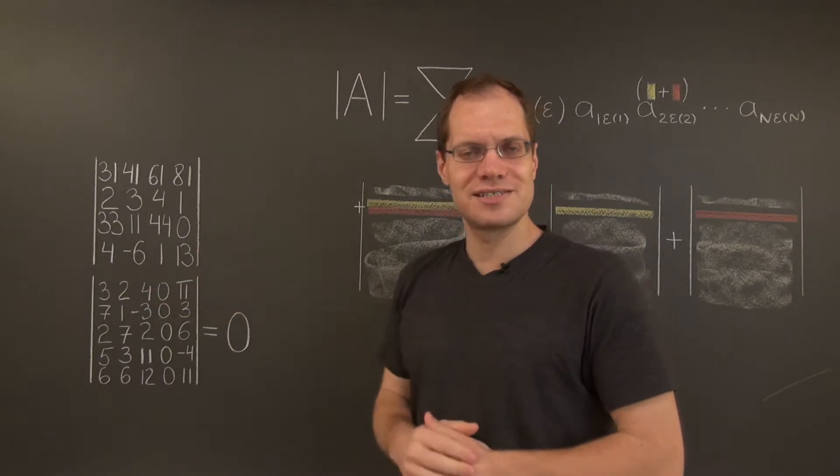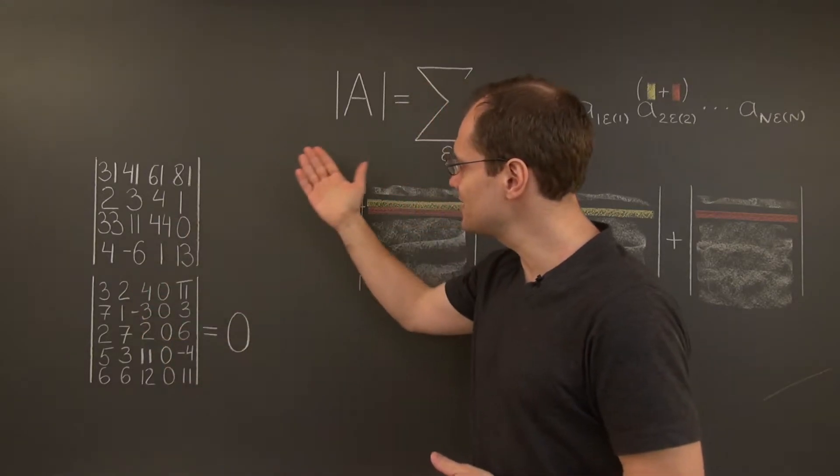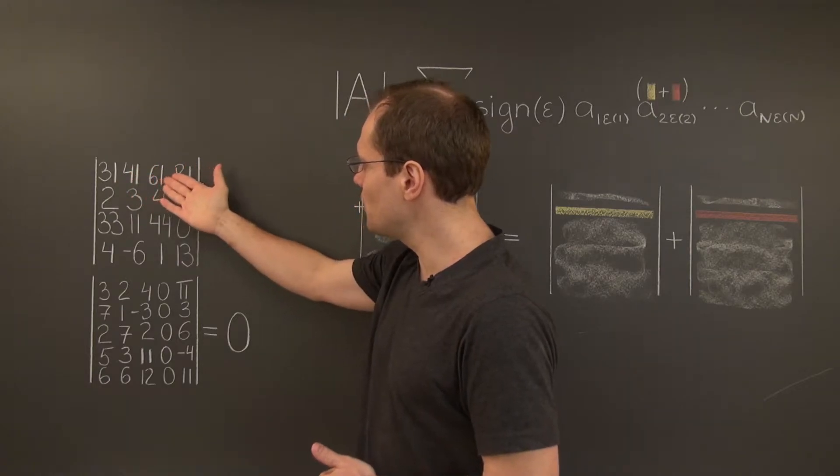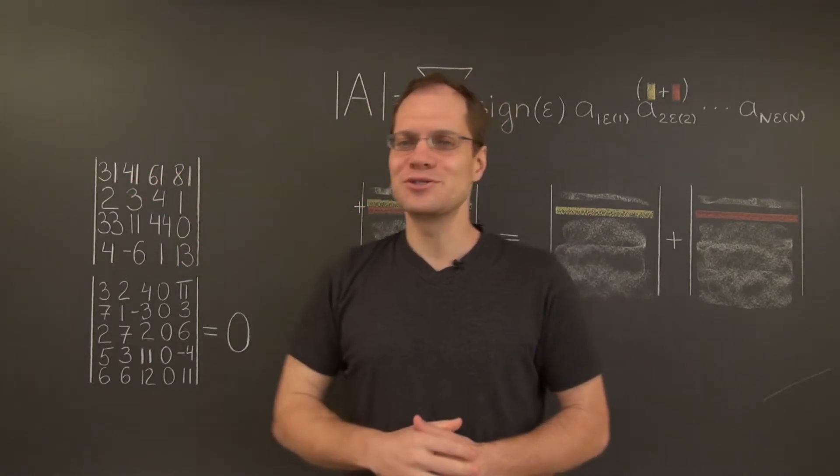and the remaining rows are the same. And the first row in the second determinant reads 1, 1, 1, 1, and the remaining rows are the same.